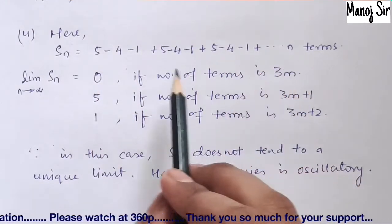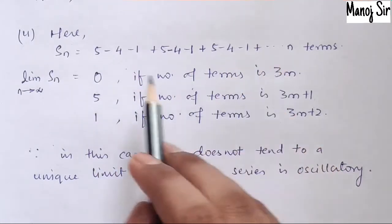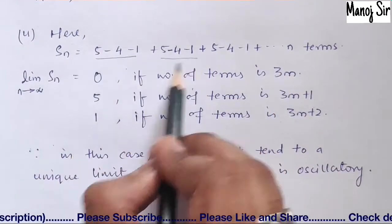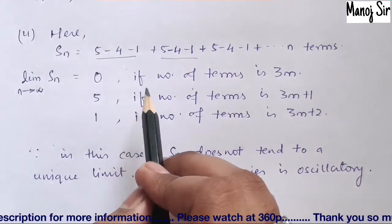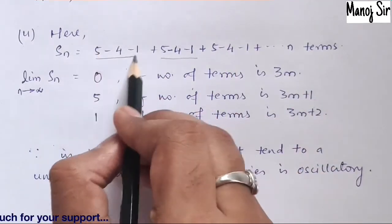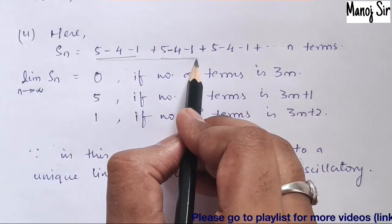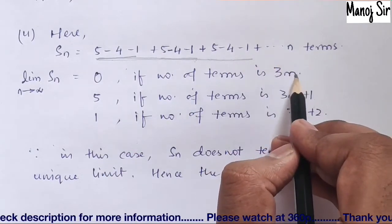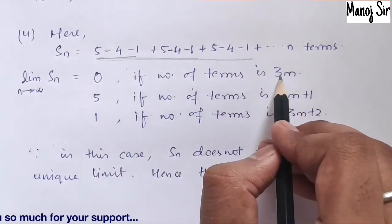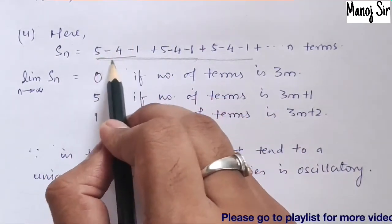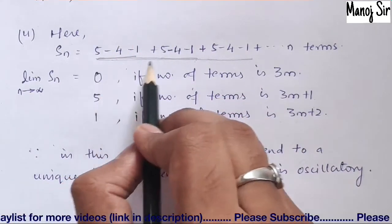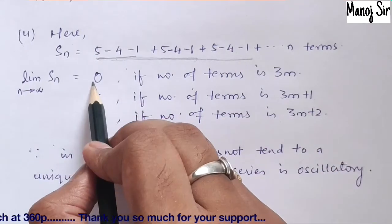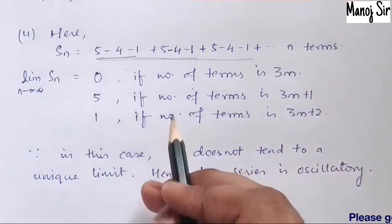Case 1: the number of terms is a multiple of 3, i.e., n = 3m. Each group of three terms — 5, −4, −1 — sums to 0. So if you add 3 terms, 6 terms, 9 terms, and so on, the sum is always 0. Therefore, when n = 3m, Sn = 0.